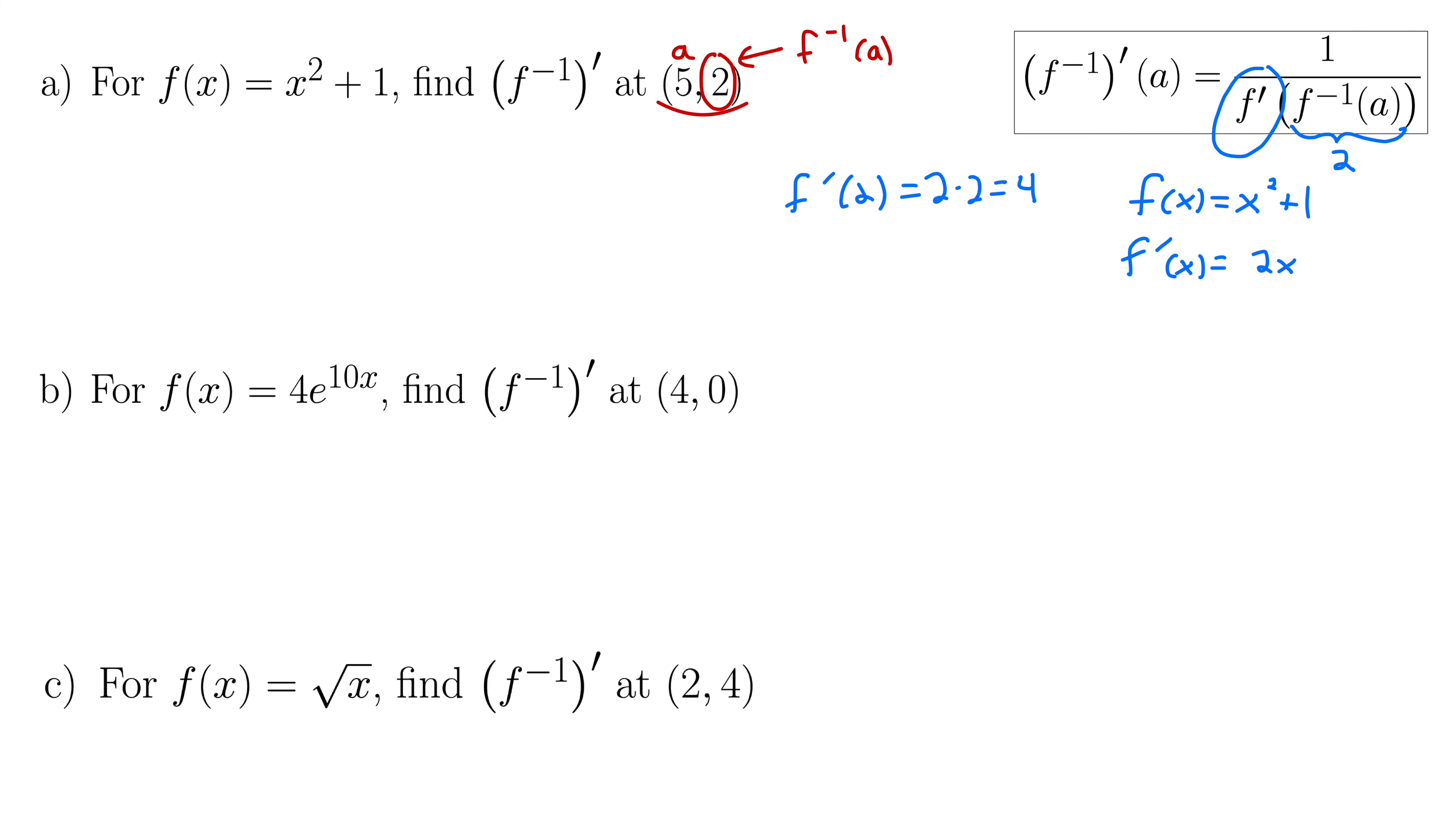And then back to our theorem again, we want 1 over that. So then our final result here, kind of working from right to left, f⁻¹'(a) at the point 5 is 1 over 2 times 2, which is 4, so 1 fourth. And that's the derivative that we're looking for.